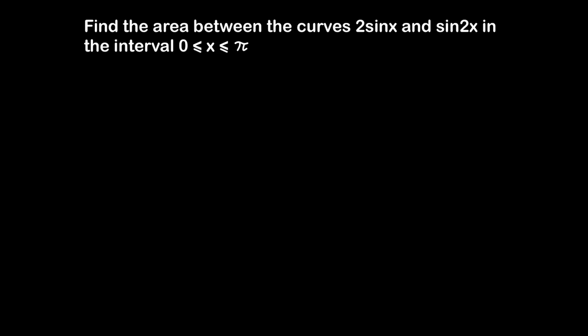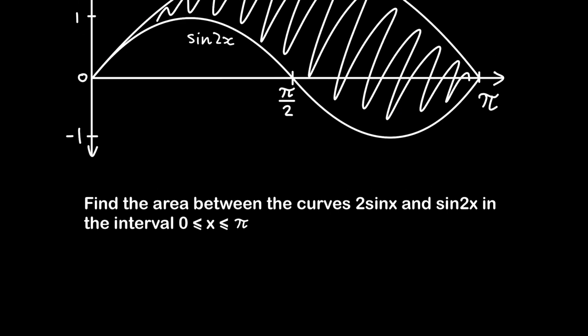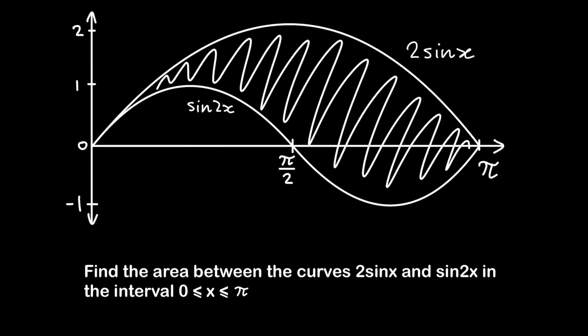Find the area between the curves 2sin(x) and sin(2x) in the interval 0 ≤ x ≤ π. I've drawn this diagram to represent these two functions on a graph so we can see what area we're talking about.